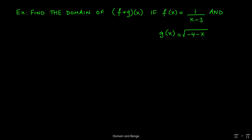In this question we're asked to find the domain of the sum of two functions, f of x equals 1 over x minus 3, and g of x equals the square root of negative 4 minus x.